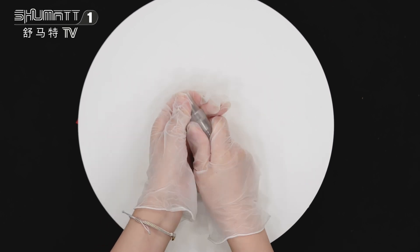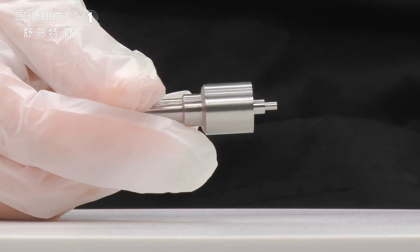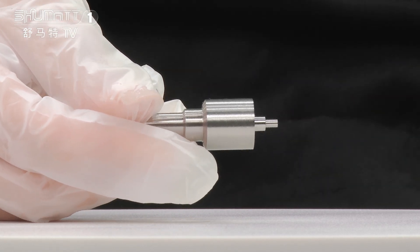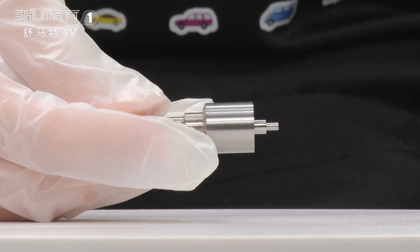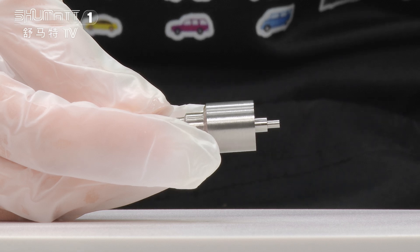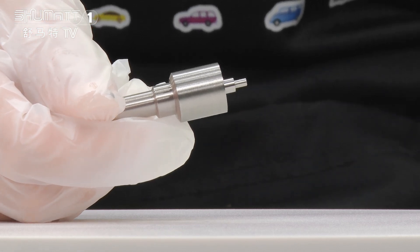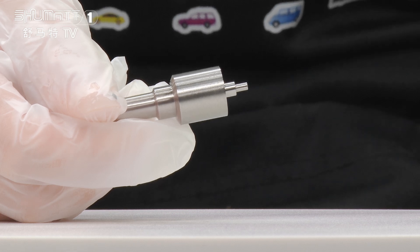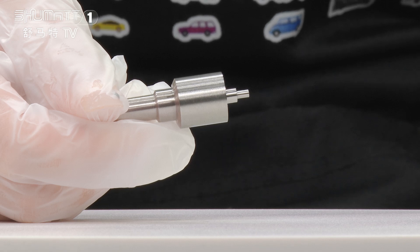Okay, let's take a look. For this inject nozzle, the part number is DSLA 150 P 1729. It is Euro 2 and China made, for inject 0433176484.